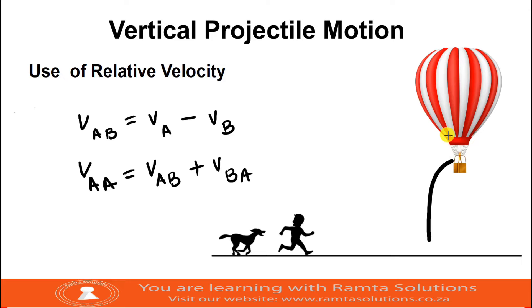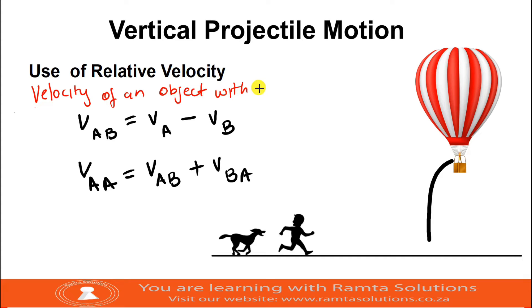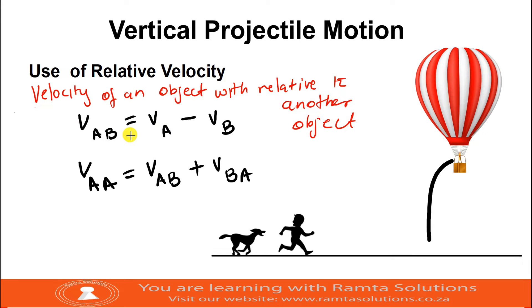For the purpose of knowledge, when we talk of relative velocity, we're basically talking about the velocity of an object with respect to another object. The formulas are: V_AB = V_A minus V_B, and V_AA = V_AB plus V_BA.